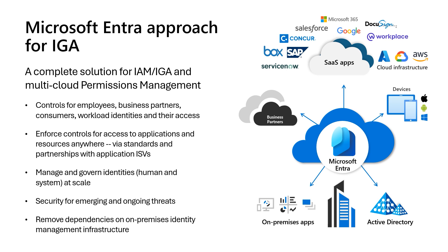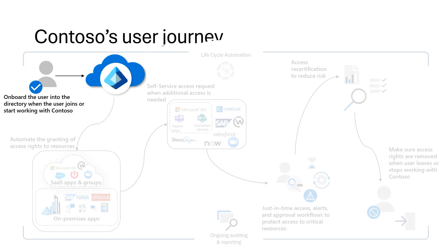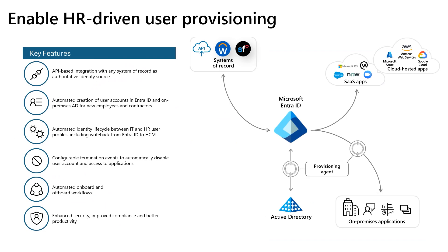Now let's look at the lifecycle of the user and how you can use Microsoft Entra Identity Governance to manage the lifecycle of that user. The first step in the user journey typically starts in the human resources system of record. Organizations using popular HR SaaS providers, such as Workday and SuccessFactors, can use the out-of-the-box integrations with Entra ID for both single sign-on and user provisioning. These integrations allow you to manage the entire lifecycle of the user — creates, updates, and disabling user accounts — and can trigger workflows before the user starts or removing access when the user leaves the company.